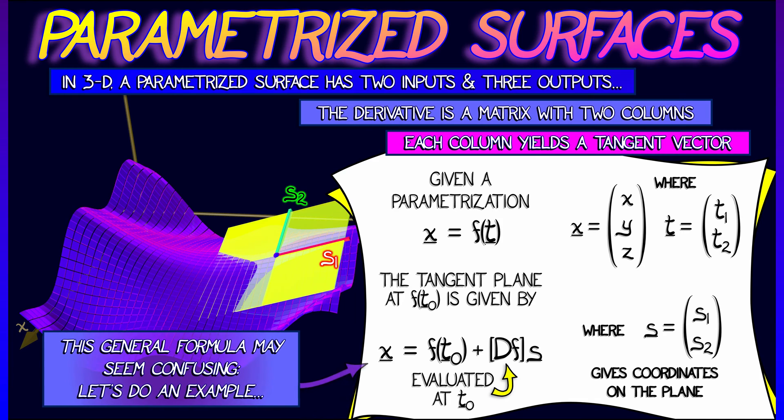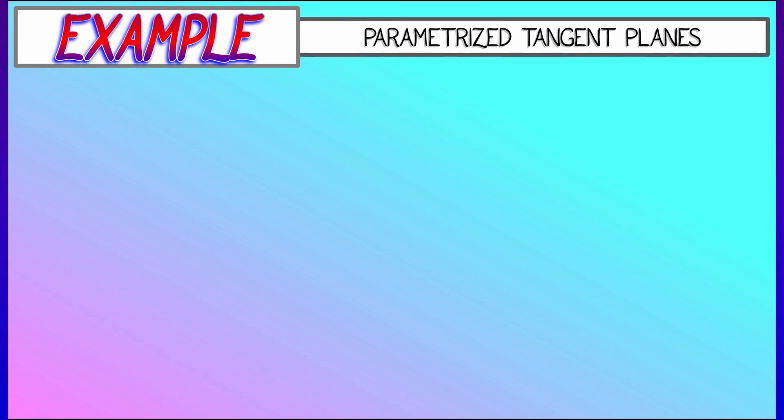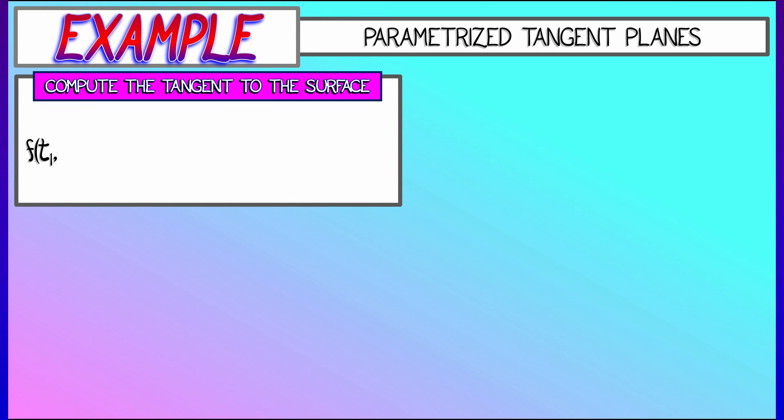Now, this formula can seem a little confusing at first. It's best to see how this works in the context of an explicit example. So, let's consider the following function, f of t1 and t2, with x-coordinate t1 minus 2t2, y-coordinate 3t1t2, and z-coordinate t2 minus t1 squared plus 10.